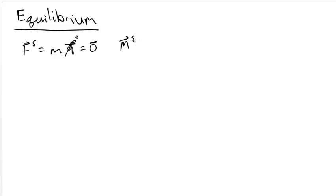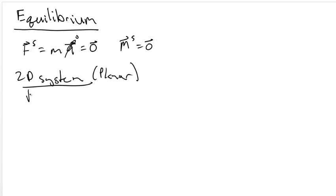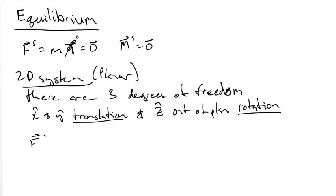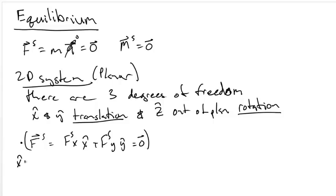It follows that the moments on the system are also zero. In a 2D system there are three degrees of freedom: X and Y translation and out-of-plane or Z rotation. Since the force on the system can be written as X and Y components, to make this vector-valued equation into a scalar equation we simply dot it. By dotting with the X vector we get the X component — the resultant force in the X direction is equal to zero, commonly denoted as the sum of forces in X equals zero.